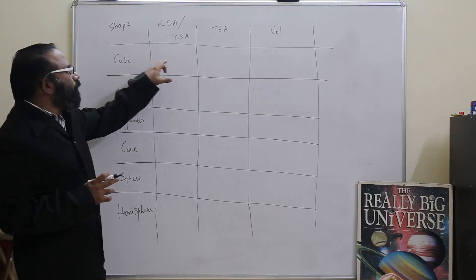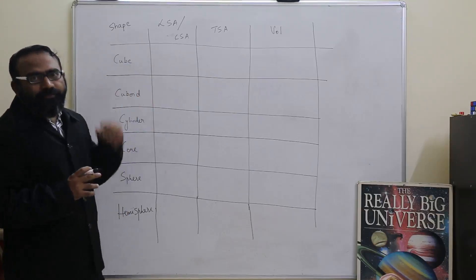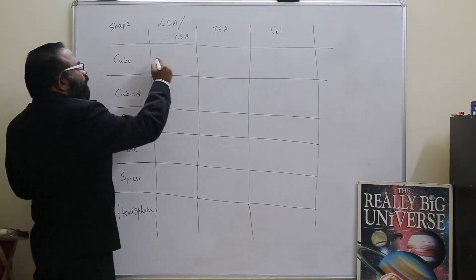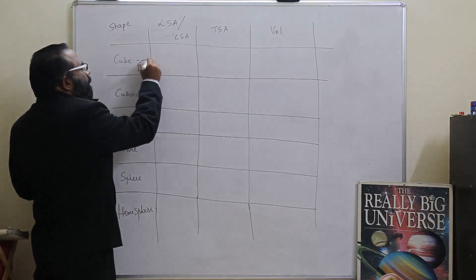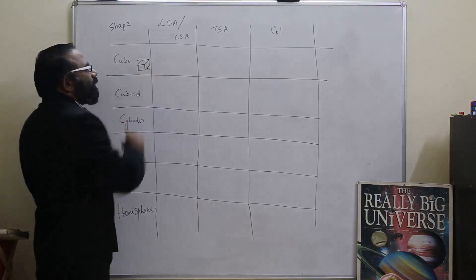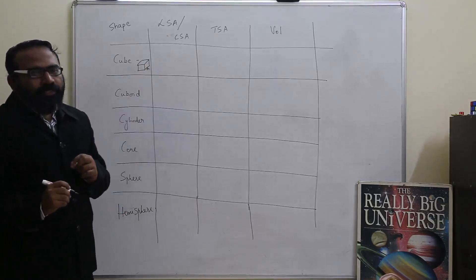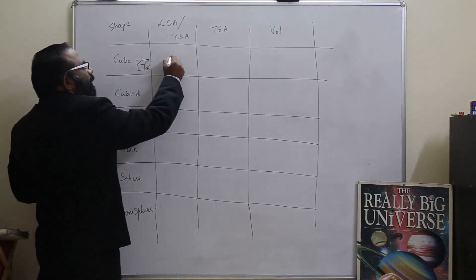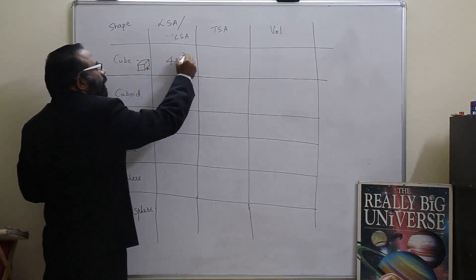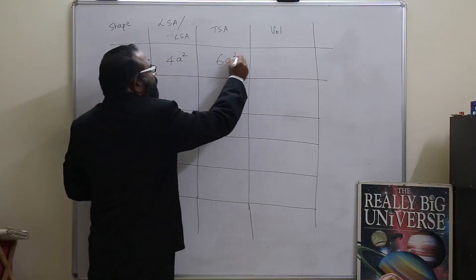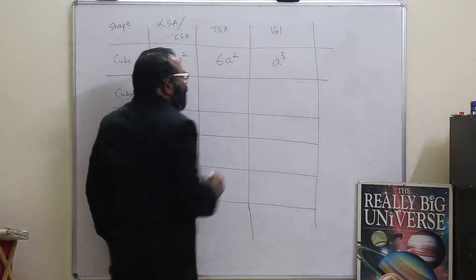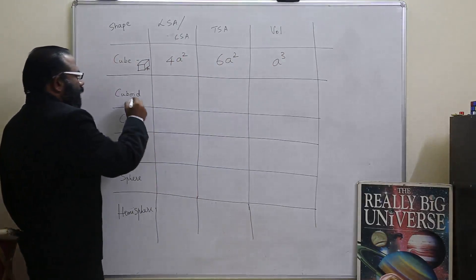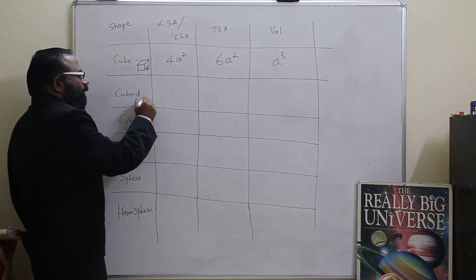The first shape that I have taken is cube. So what would be the lateral surface area of a cube of side a? The side edges of length a, so the lateral surface area is 4a squared, the total surface area is 6a squared, and the volume is a cubed. Now cuboid having length, breadth, and height.